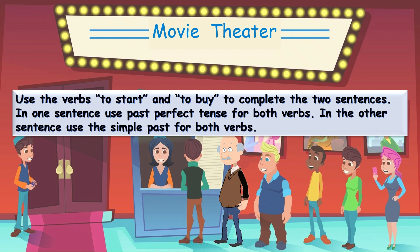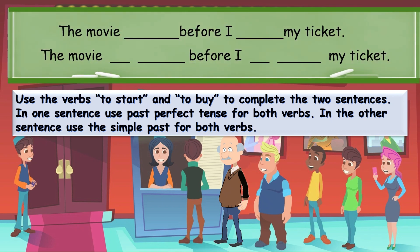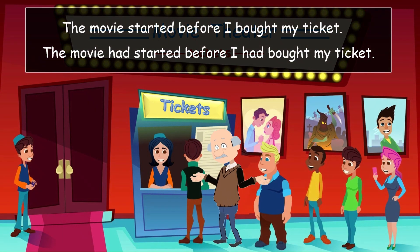Use the verbs 'to start' and 'to buy' to complete two sentences. In one sentence use past perfect tense for both verbs; in the other use simple past for both verbs. The movie started before I bought my ticket. The movie had started before I had bought my ticket.